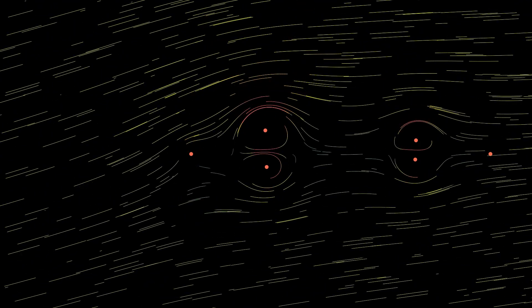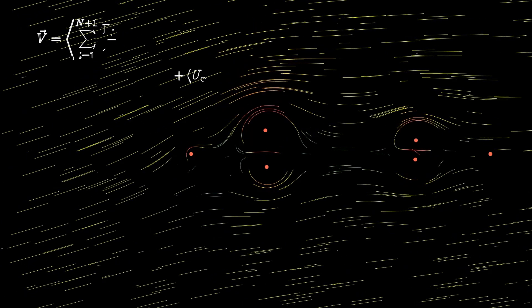So now that we have our vortex strengths we can make the velocity fields as seen here. Since we are using ideal vortexes we can linearly add them all up and then add in the free stream flow.